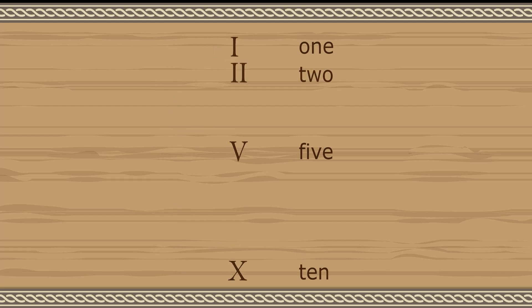The quantities 2 and 3 are represented by 2 or 3 I's. The quantities 6, 7, and 8 are represented by the symbol for 5, V, followed by 1, 2, or 3 I's.